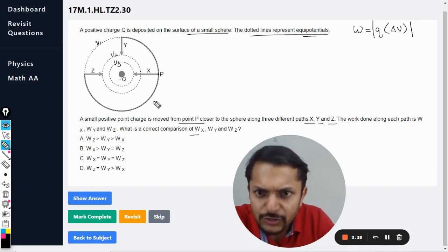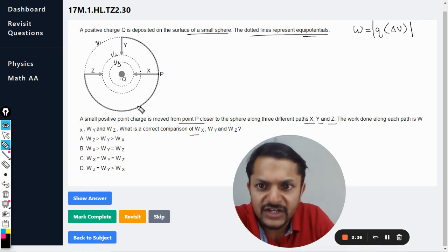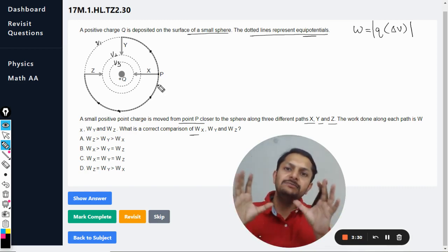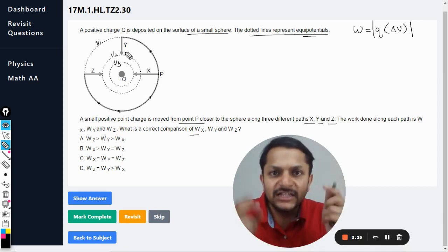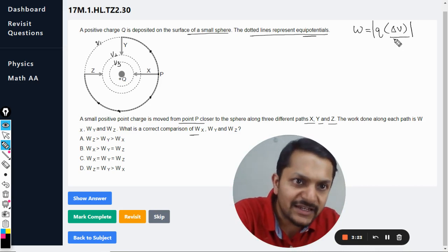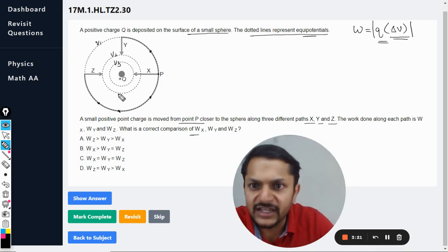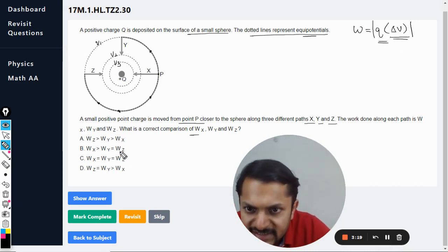And this path does not matter because it is an equipotential surface. So it doesn't matter whether you are at this point or that point or any point, it doesn't matter at all. And in the case of Z and Y, the potential difference that the charge is shifted is the same, and the charge is the same.